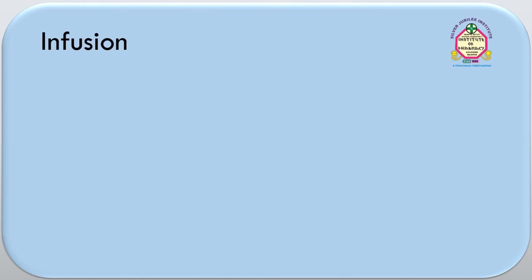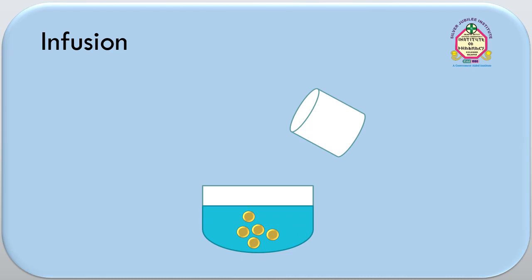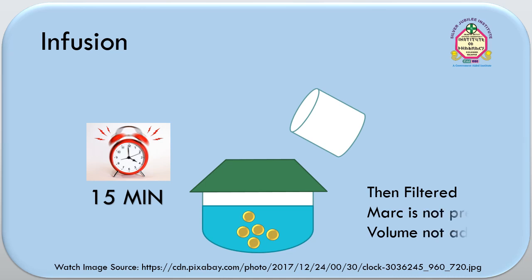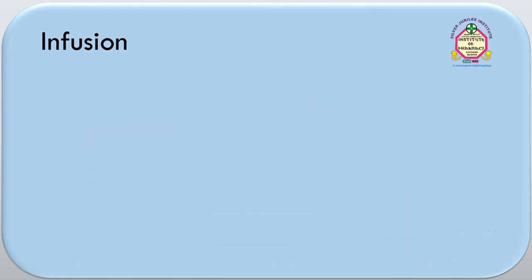Now, first we have to discuss about infusion. What is infusion? In this process, drug is kept in contact with water, boiling water, or menstruum for a specific duration — usually 15 minutes — with occasional stirring and finally filtering of the liquid. The marc which remains behind after infusion is not pressed, and the final volume is not adjusted in this process. An infusion pot is used for this process.